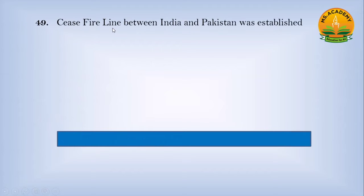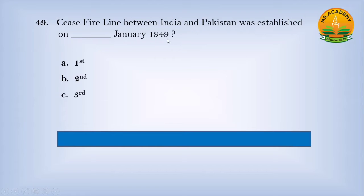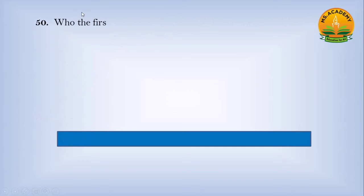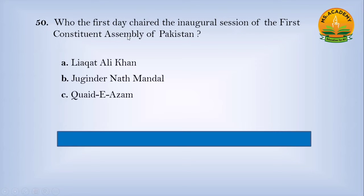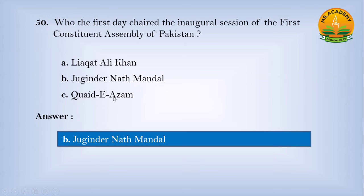The ceasefire line between India and Pakistan was established on which date in January 1949? Option A first, option B second, option C third — answer is A, first January 1949. Who chaired the inaugural session of the first Constituent Assembly of Pakistan? Option A Liaquat Ali Khan, option B Jogendra Nath Mandal, option C Quaid-e-Azam — answer is B, Jogendra Nath Mandal.